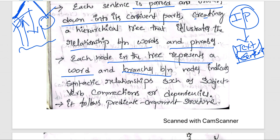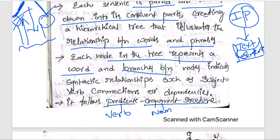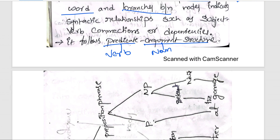Constructing the parse tree follows a predicate-argument structure. Predicate is nothing but a verb, and argument is nothing but a noun. The structural representation of the relation between the noun and verb can be represented in the form of a tree — a parse tree.